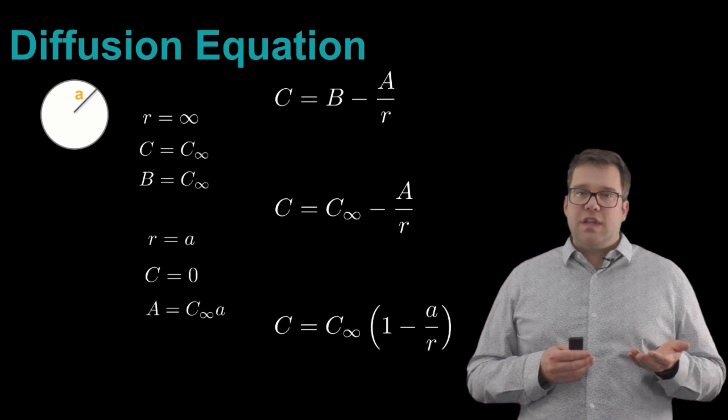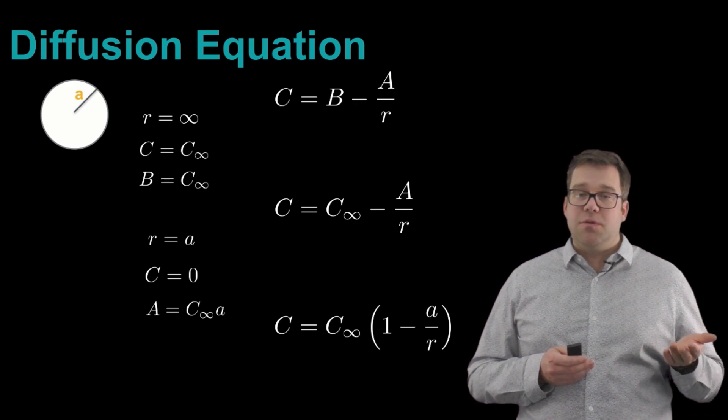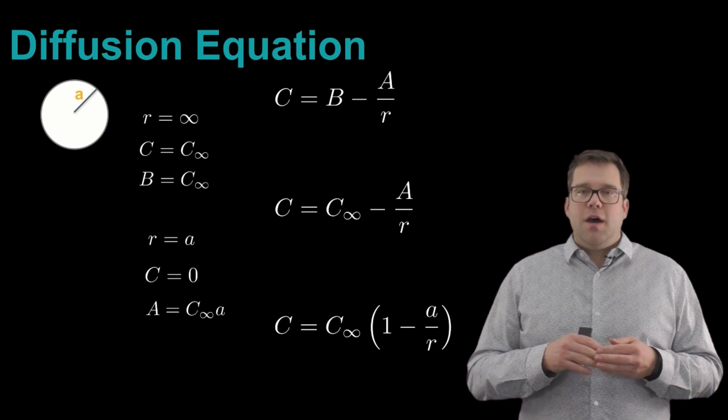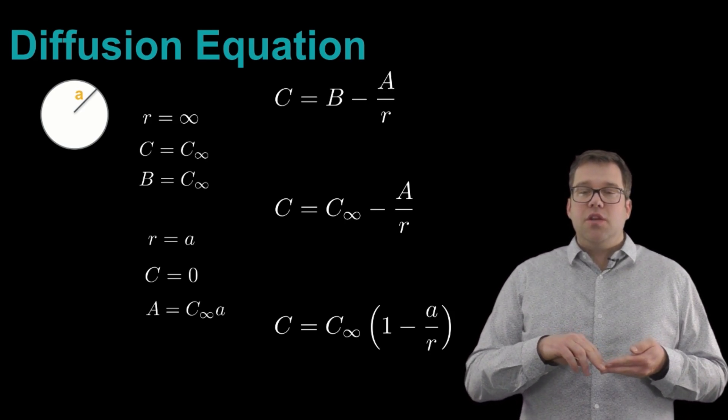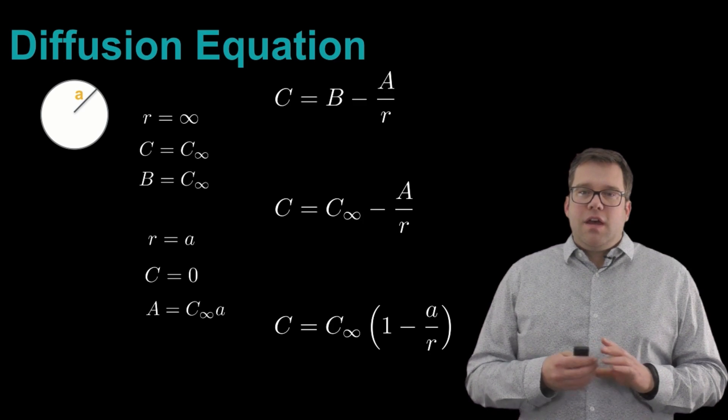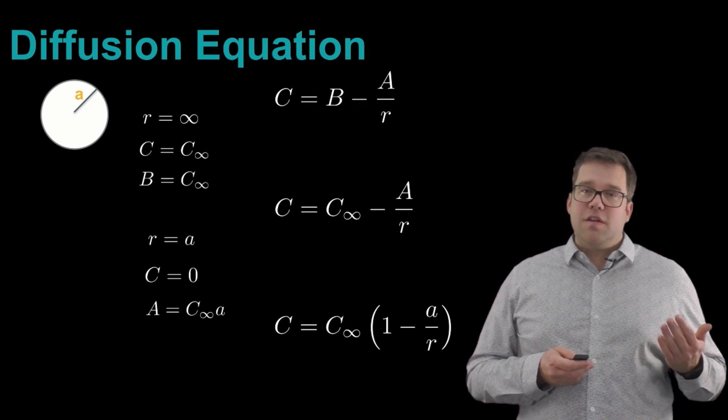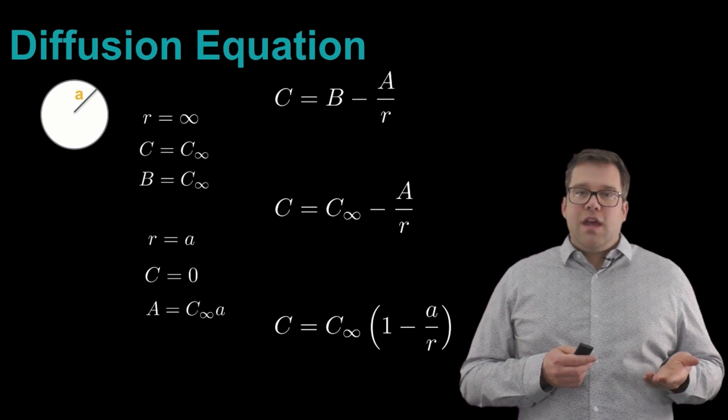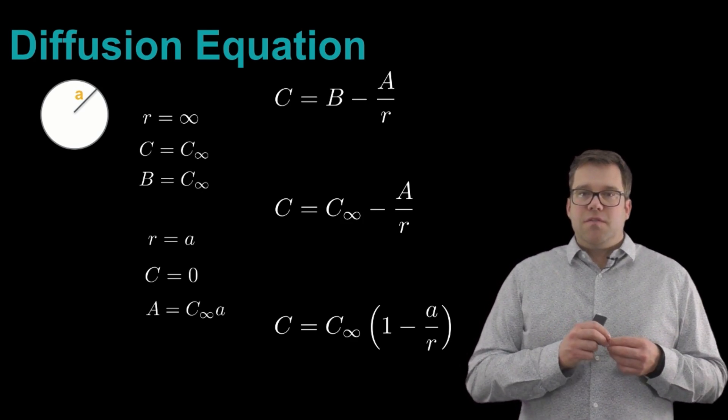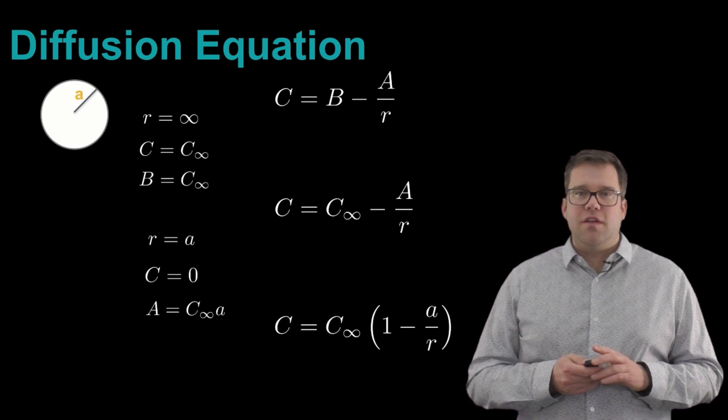So you can see that when r equals a, the concentration goes to zero because you have one minus one. And then the concentration is going to increase very rapidly away from the cell as r starts to grow, become much larger than a. Because a over r is going to become small fairly quickly, and we'll go to C equals C infinity at a fairly short distance away from one of these spherical cells.